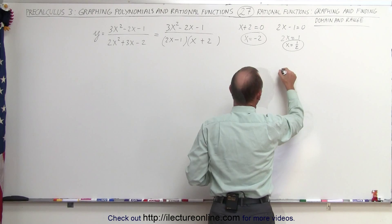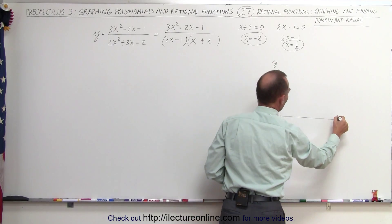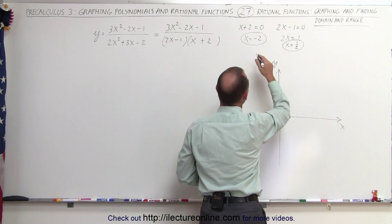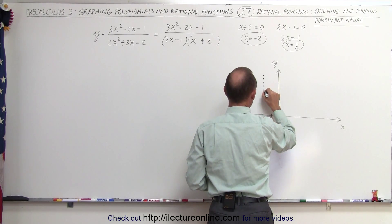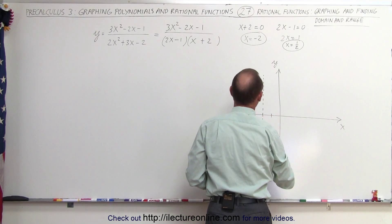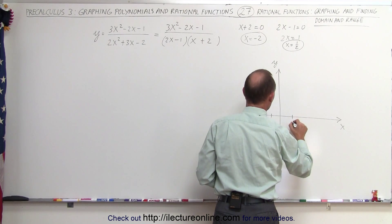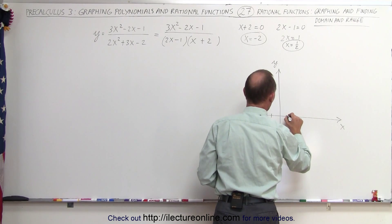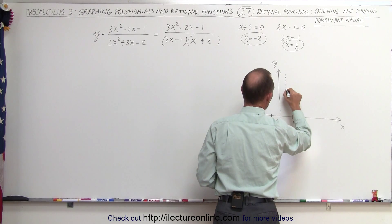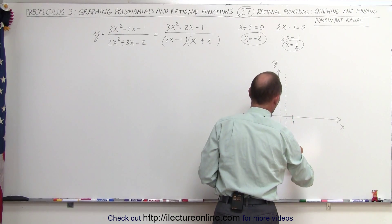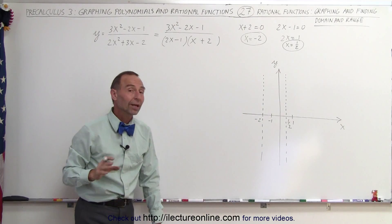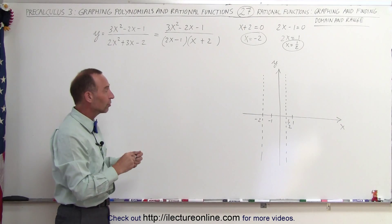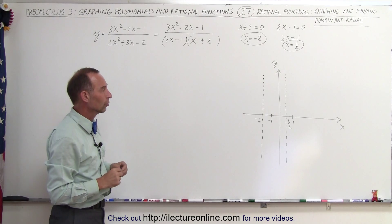Let's go ahead and draw the axes. So x equals negative 2 — there we'll have a vertical asymptote. And at x equals 1 half, there will be another vertical asymptote. So we know whatever happens, the graph will never cross those two vertical asymptotes.